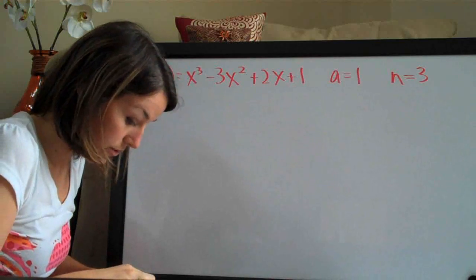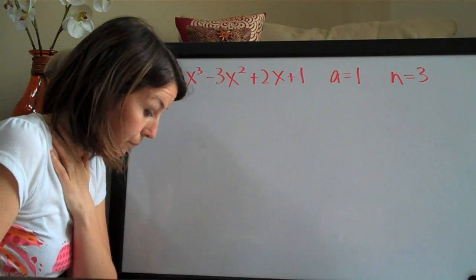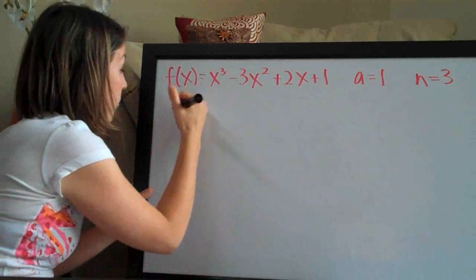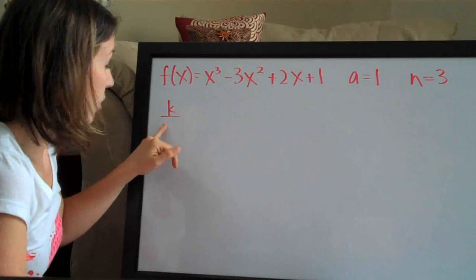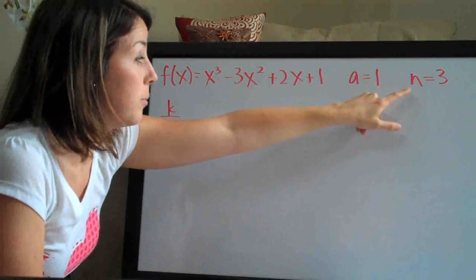The best way to do Taylor polynomials, I think, is to construct the following table. This table has four columns. The first column is k. Since we're computing the third degree polynomial...